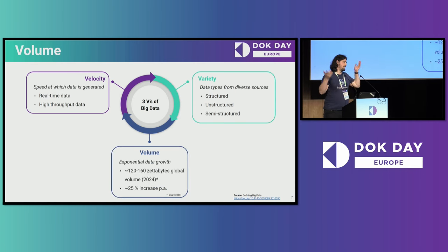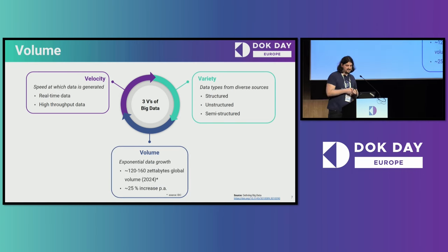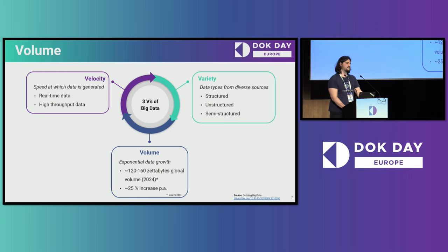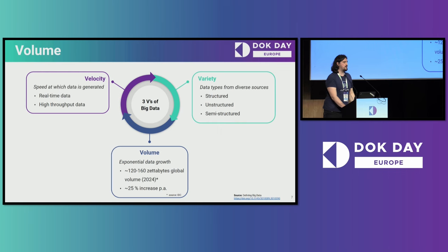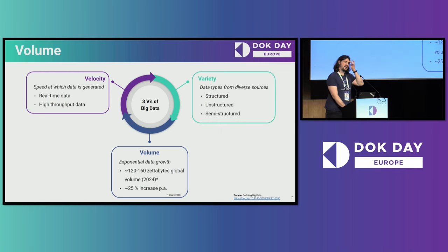And there is the elephant in the room: the volume of data. It's estimated by the IDC that this year 120 to 160 zettabytes are globally generated, about a 25% increase per year. From the field I'm from, where genomics data plays a heavy role, the NCBI estimates that data is approximately doubling every seven months — so it's even worse in research.